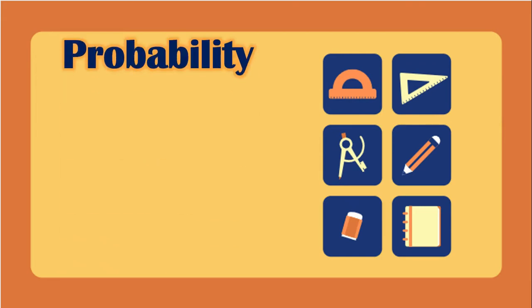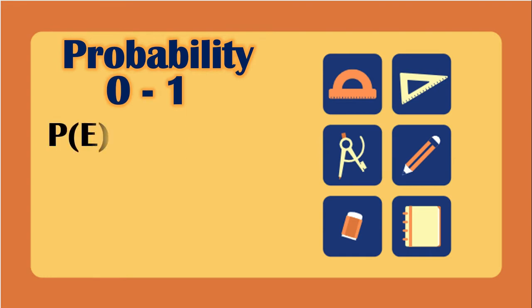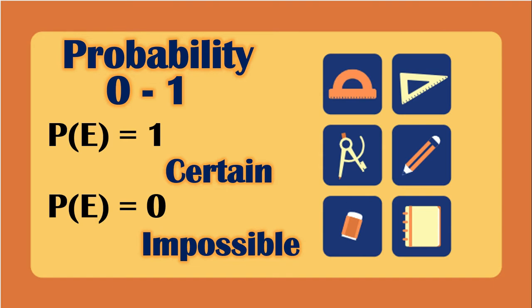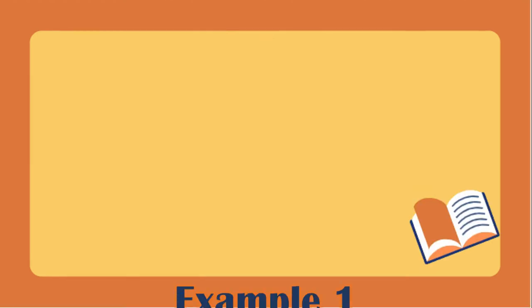In probability, our answer should be between 0 and 1 only. If the probability of an event is 1, the event is certain. If the probability is 0, the event is impossible. Our answer can be expressed as a percentage, decimal, or fraction, and we will widely use fractions.